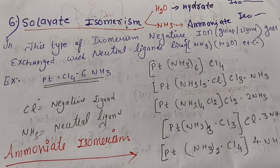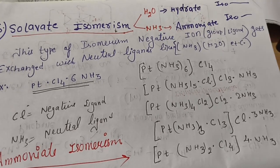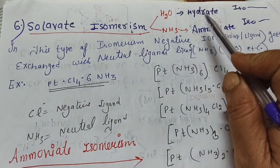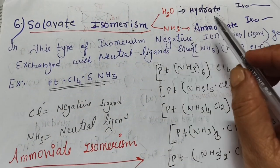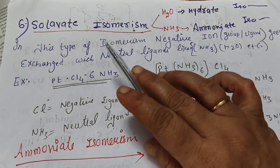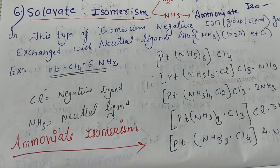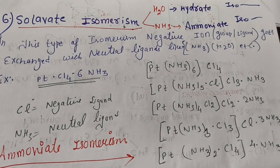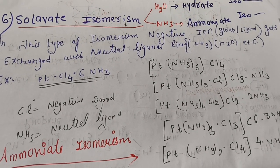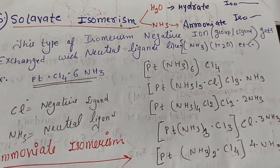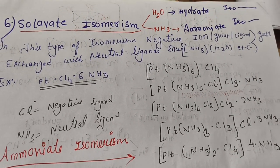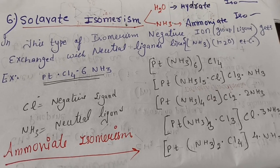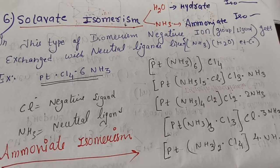Solvate isomerism is of two types: hydrate isomerism, where the ligand being exchanged is a water molecule, and ammoniate isomerism, where the exchanged neutral ligand is ammonia. In solvate isomerism, a negative ligand is exchanged with a neutral ligand. The main neutral ligands in coordination chemistry are water and ammonia.